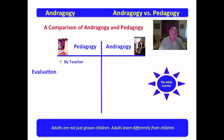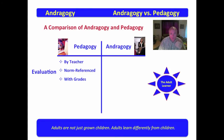In pedagogy, evaluation is done by the teacher. It's norm-referenced and generally involves grades. I'm amazed sometimes in higher learning that people freak out because they made a 92 versus a 93 — that comes from being ingrained with the pedagogical mindset. The teacher's in charge, you're going to get a grade, and norm-referenced means you are judged against your peers. If you want to succeed, just get with a slow herd — that way you can outrun them.